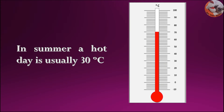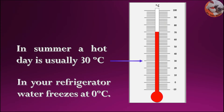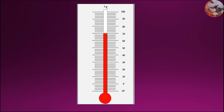In summer, a hot day is usually 30 degrees Celsius. In your refrigerator, water freezes at 0 degrees Celsius. In this thermometer, these are the scale, and this is the bulb.